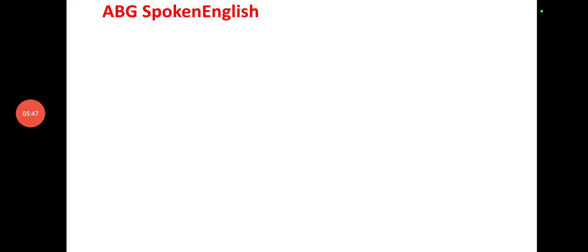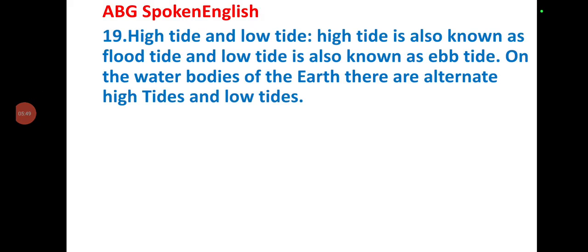High tide and low tide: high tide is also known as flood tide, and low tide is also known as ebb tide. On the water bodies of the earth, there are alternate high tides and low tides.